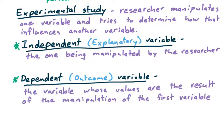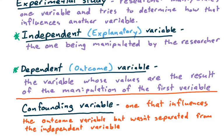And the dependent, or outcome variable, is the variable whose values are the result of the manipulation on the first variable. Another type of variable is one that we have to be extremely careful about. It is what we call a confounding variable, also referred to as a lurking variable. This is one that influences the outcome variable but wasn't separated from the independent variable.